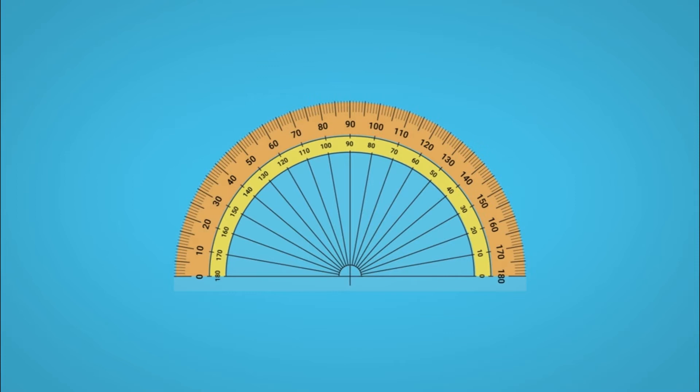Outer and inner scales, both running from 0 to 180. A baseline and a perpendicular line indicating the 90 degree mark. The point where these two straight lines meet is known as the centre of the protractor.